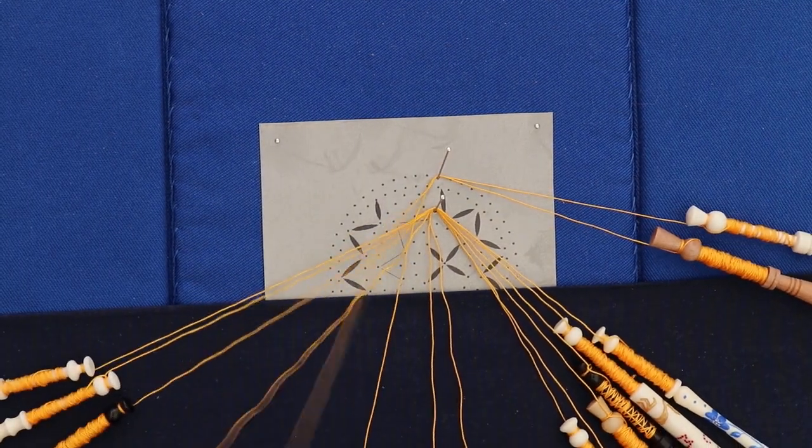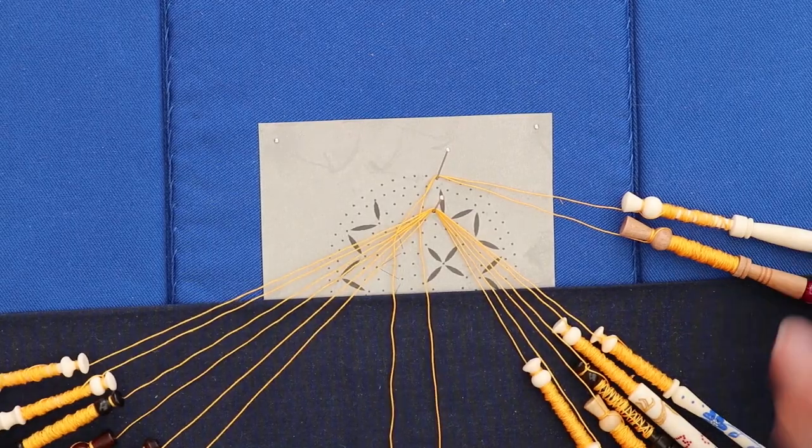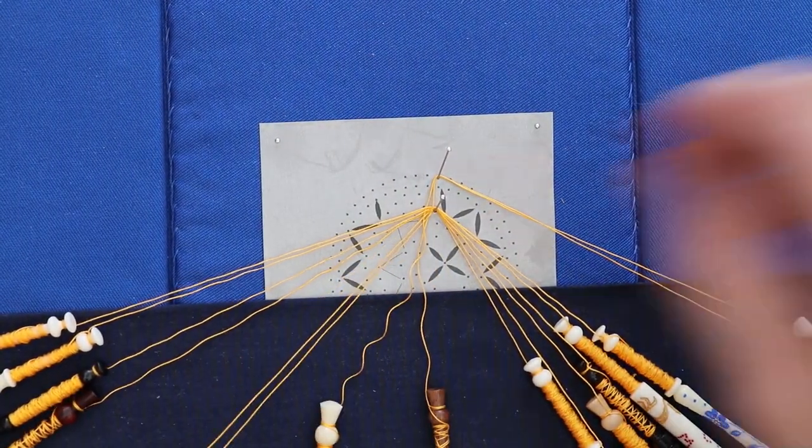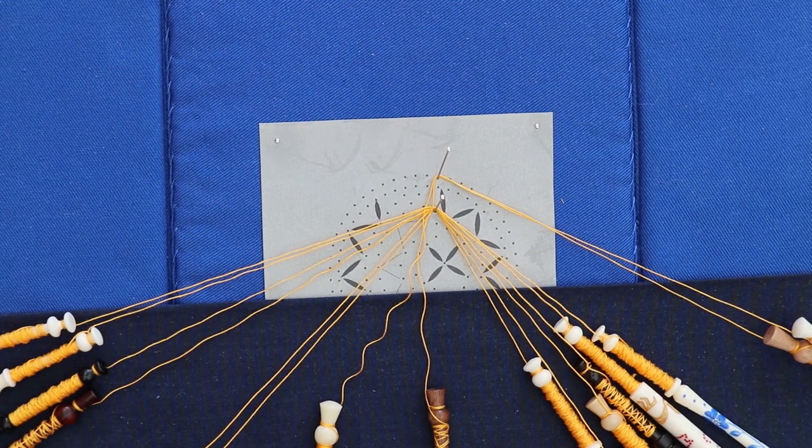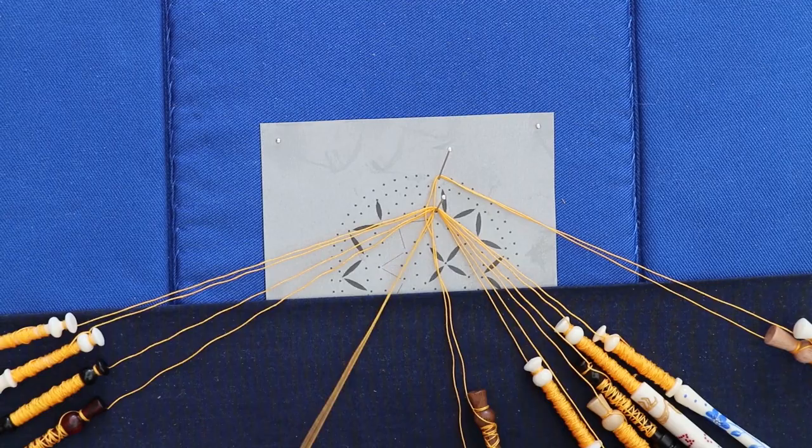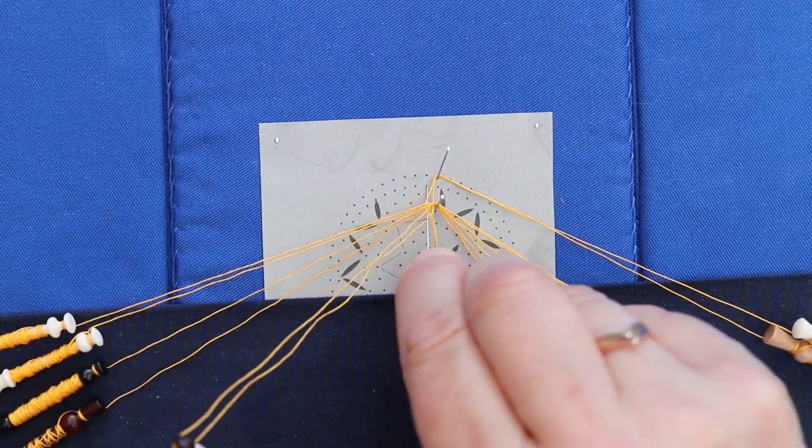Once you've got the first couple of pins in, then you can actually take the temporary support pin out. You work through the three and put a pin in in the trail edge. Now some people do turn the pillow to work this.